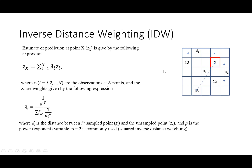Inverse distance weighting uses this expression: zx is the estimate at point x, calculated as a summation of lambda times z, where z is the observed value. So the value 12 is multiplied by weight lambda, added with observation 15 and its weight, and observation 18 and its weight.